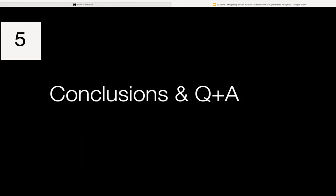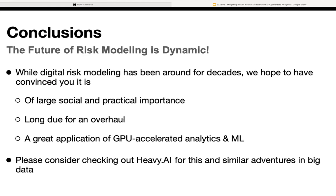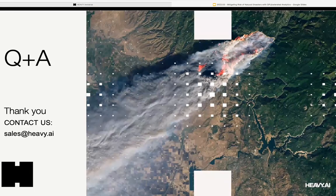In conclusion: the future risk model is dynamic. Digital risk modeling has been around for decades, but it's of large social and practical importance, it's long overdue for an overhaul, and it's a great application of GPU-accelerated analytics and machine learning. Please consider checking out Heavy AI for this and similar ventures in big data. With that, I'd be very happy to take some questions.